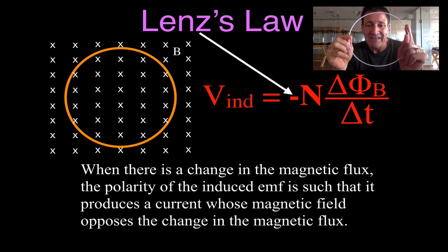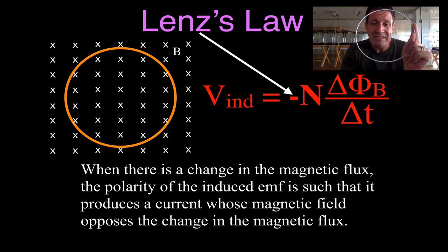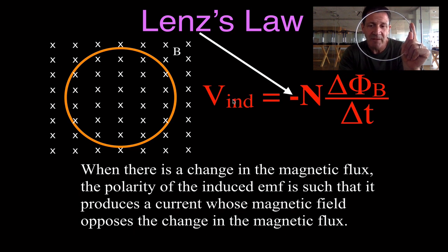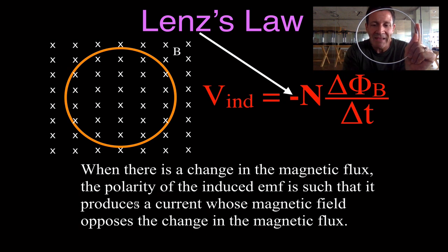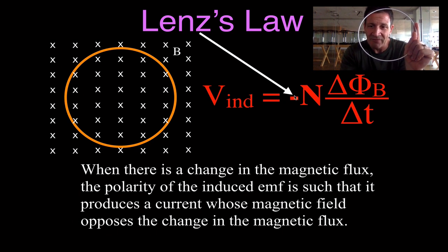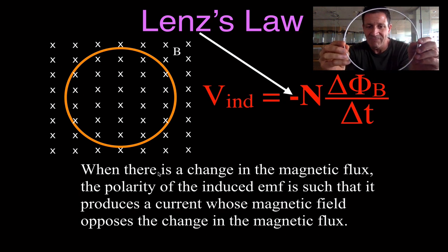It says: when there is a change in the magnetic flux — so we have a coil of wire, we change the magnetic flux, we change the magnetic field strength inside the coil — then the polarity of the induced EMF is such that it produces a current whose magnetic field opposes the change in the magnetic flux. That negative sign means 'opposes,' which means opposite, or negative in a sense. This negative sign reminds us that when there's a change in the flux, the polarity of the induced EMF produces a current whose magnetic field opposes the change.